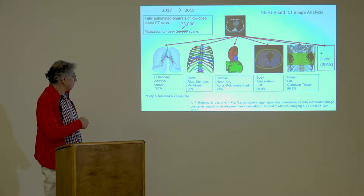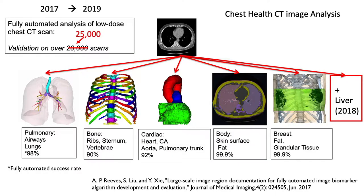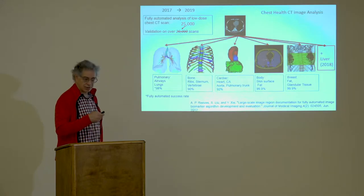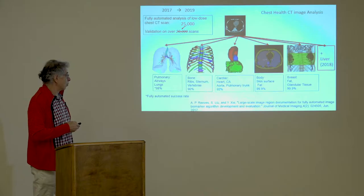This is sort of where we're at. You can see the airways — we can do all kinds of measurements on them. We can automatically get and label the bones, look at the pulmonary artery and measure its size, measure the aorta, get heart size and volumes, body surface areas, fat, and do automated analysis of breast tissue. One of the hotter topics right now is looking at muscle quantity and quality as an index of a person's health.